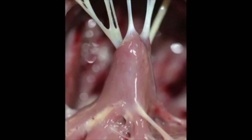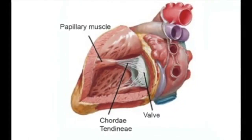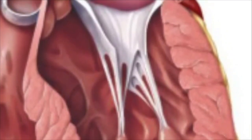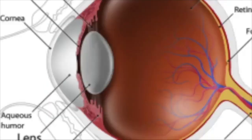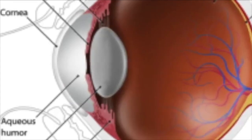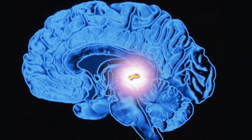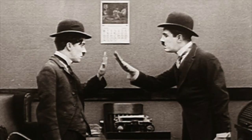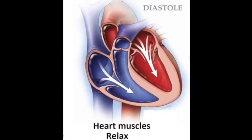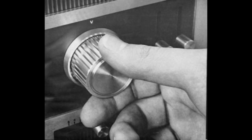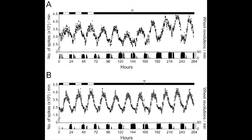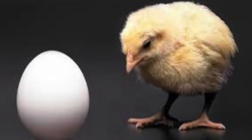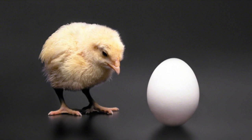Inside the heart, we find structures called the papillary muscles and the chordae tendineae. The function of these structures is to pull open the heart valves. Likewise, inside the eyes, we find very similar structures called the ciliary muscle and the zonular fibers, whose function is to pull the lens to focus the eye. The pineal gland is also associated with the circadian rhythm or sleep cycle, which I believe is a counterpart for the systoles and diastoles of the heart. The circadian rhythm and the heartbeat modulate the two largest electric fields generated by the body — the heartbeat around the heart, and the circadian rhythm around the head.